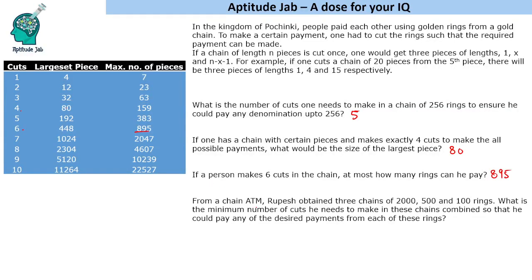Question 4: Rupesh obtained 3 chains of 2000, 500, and 100 rings. What is the minimum number of cuts needed combined so he can make any payment from each chain? For 100 rings: 4 cuts (3 cuts only covers up to 63). For 500 rings: 6 cuts (5 cuts only covers up to 383). For 2000 rings: 7 cuts. Total: 17 cuts. I hope you enjoyed this and understood the concept. Please like the session and ask any queries in the comments below.